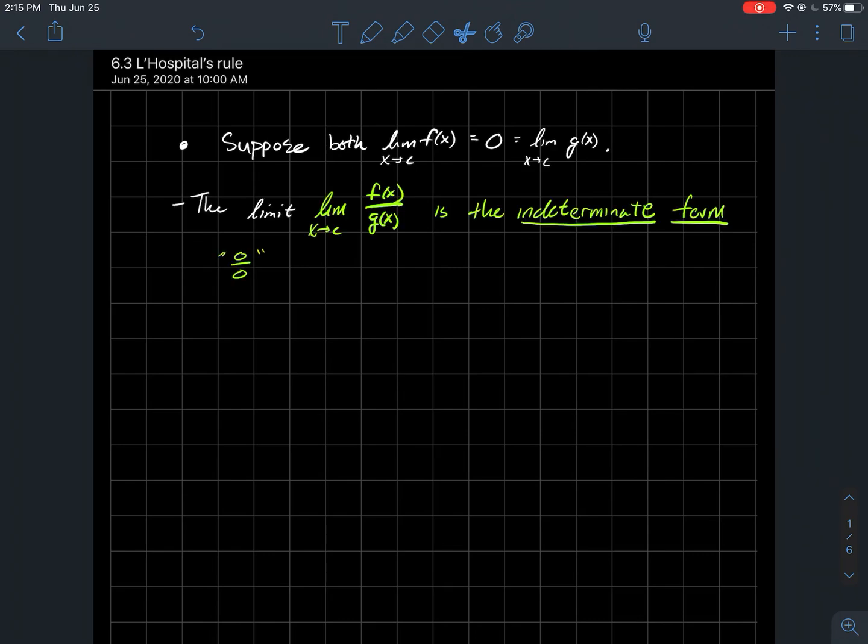So what we're interested in is what can we say about the limit of the quotient f over g? So if you notice, like if both of these go to zero, well then this is an indeterminate form zero over zero.